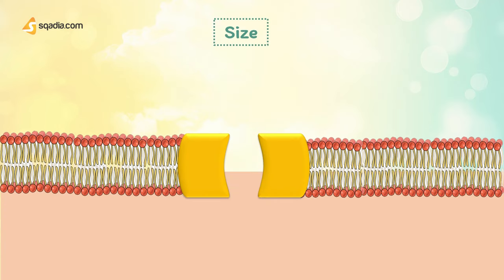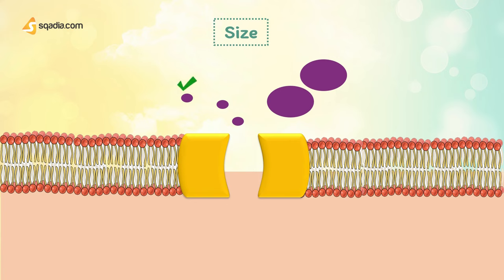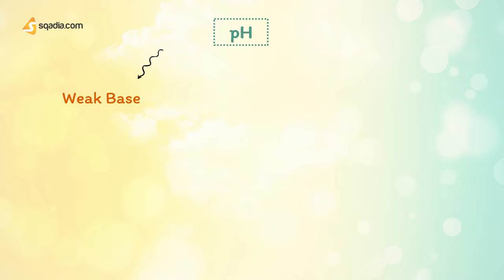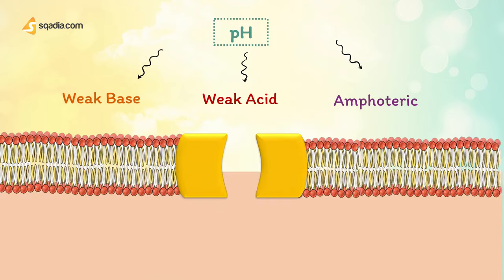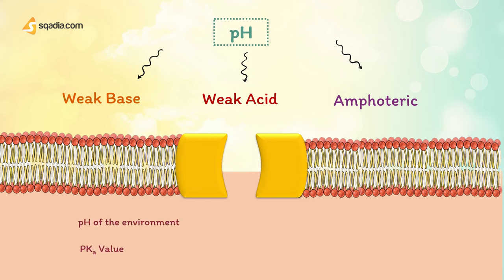Next is size. Small molecular size is another factor that favors absorption. Most drugs are small molecules that are able to diffuse across membranes in their uncharged state. If we discuss pH, most drugs are either weak bases, weak acids, or amphoteric. Amphoteric means molecules that contain both acidic and basic groups. Drug absorption depends on the pH of the environment in which they dissolve, as well as the pKa value of the drug, which determines the fraction in the unionized form that is in solution and able to diffuse across cell membranes.